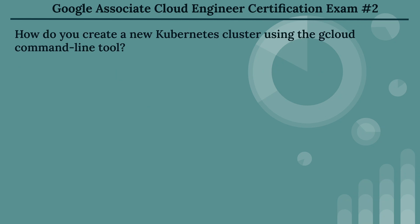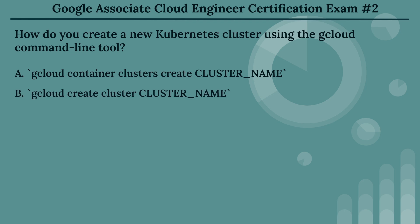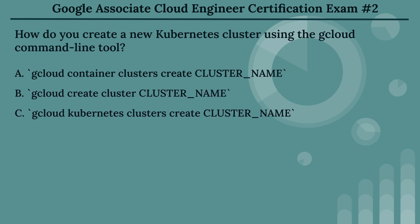The second question: how do you create a new Kubernetes cluster using the Cloud command line tool? The options are: Option A, gcloud container clusters create cluster_name. Option B, gcloud create cluster cluster_name. Option C, gcloud kubernetes clusters create cluster_name. Option D, gcloud container create cluster cluster_name.